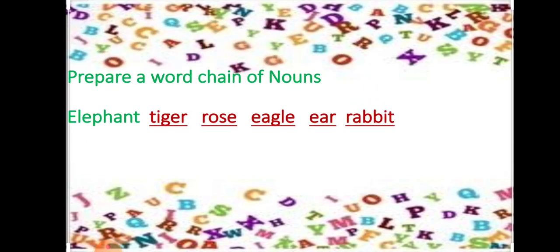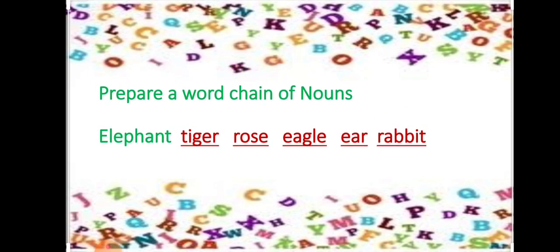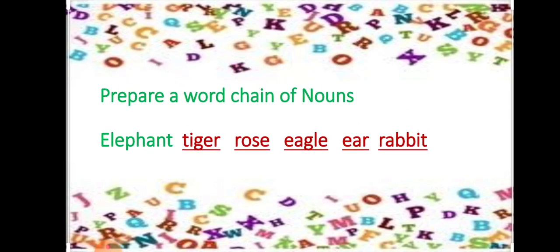Let us prepare a word chain of nouns. My first word is 'elephant.' So the chain goes: elephant, tiger, rose, eagle, ear, rabbit.